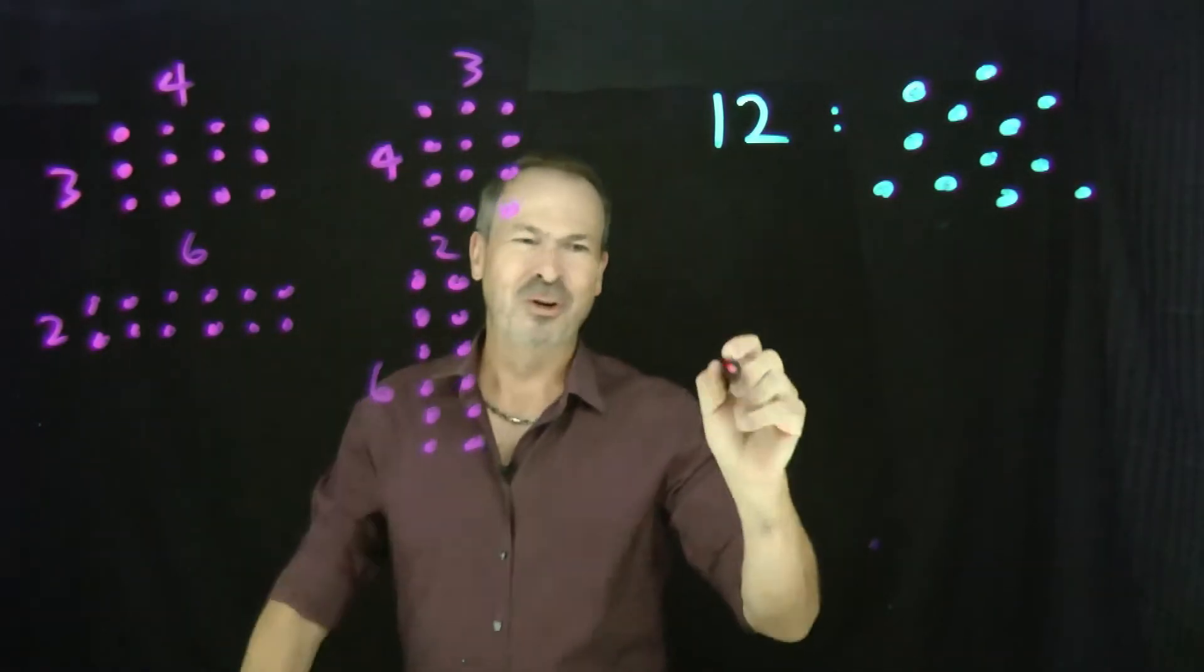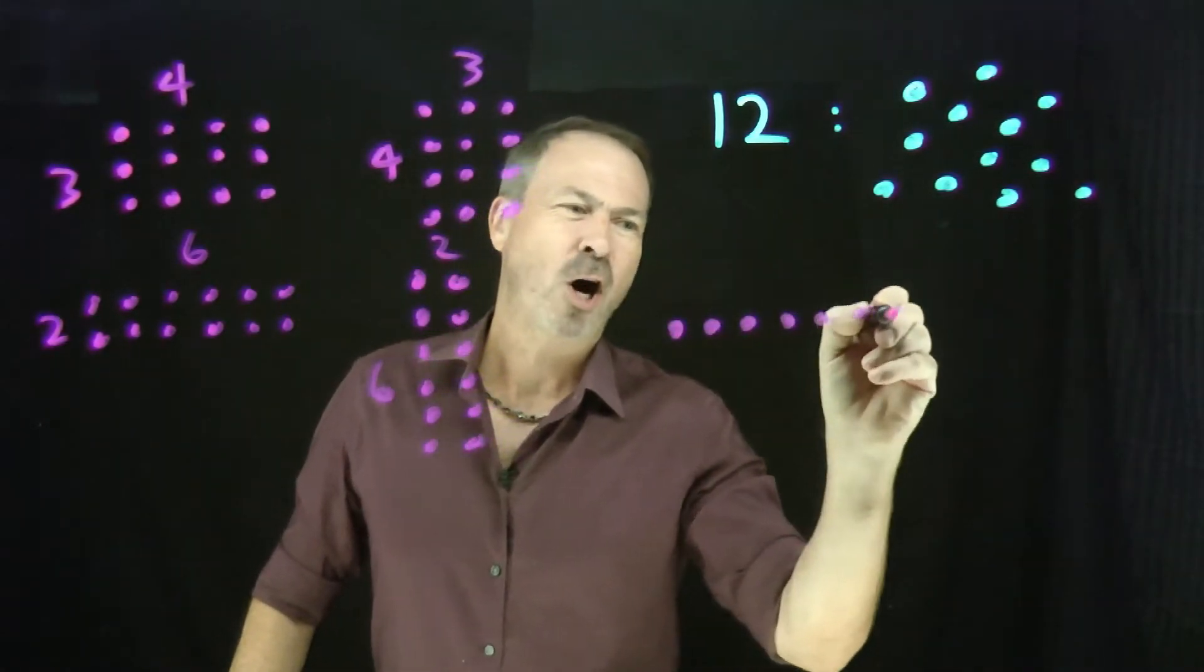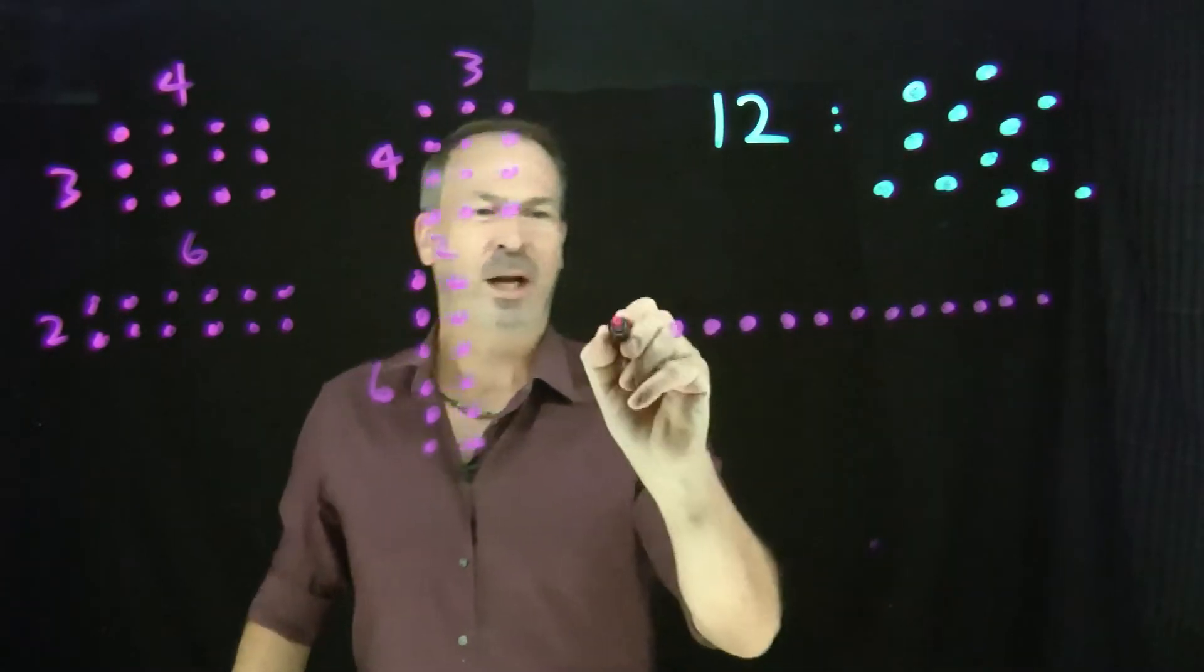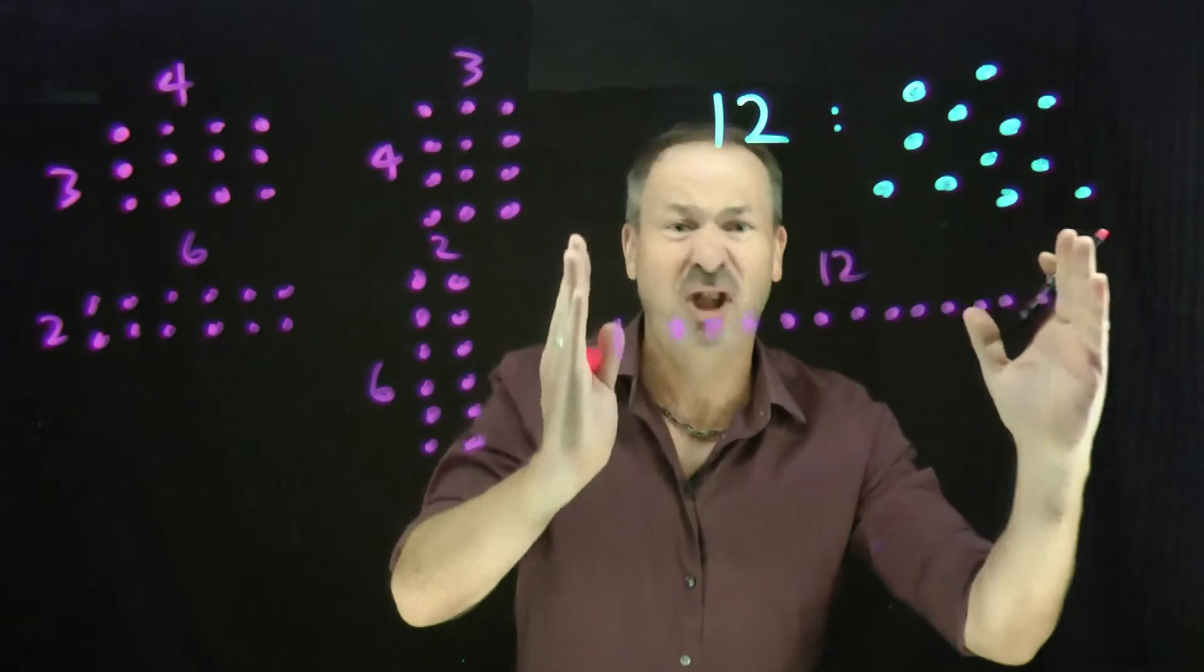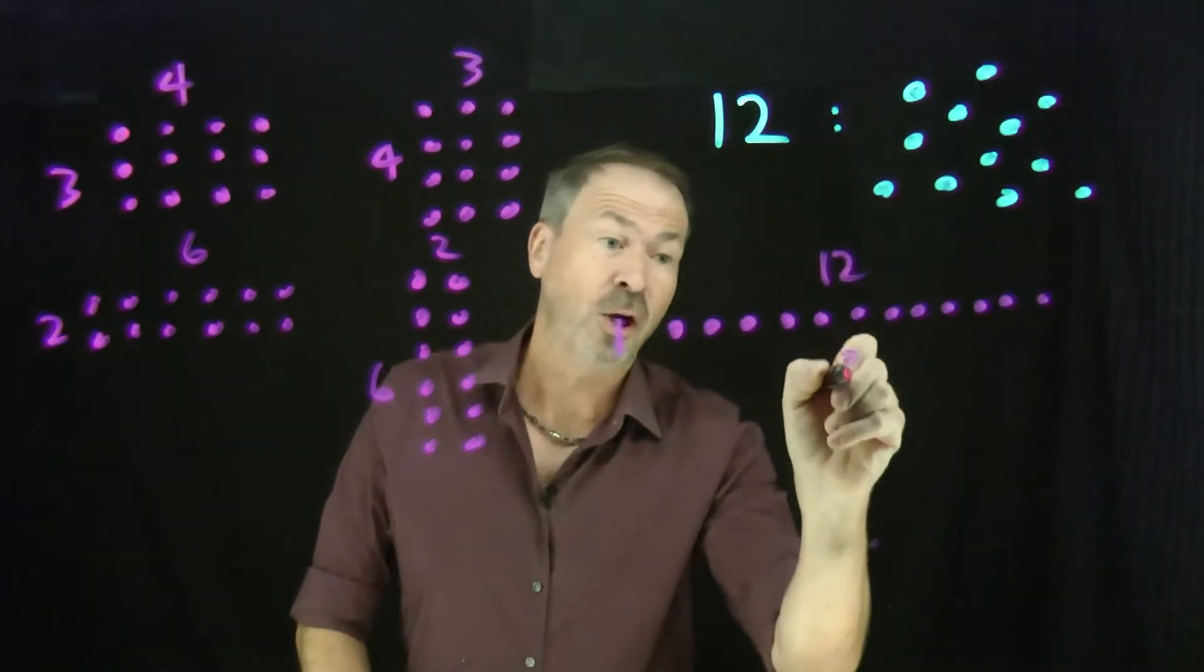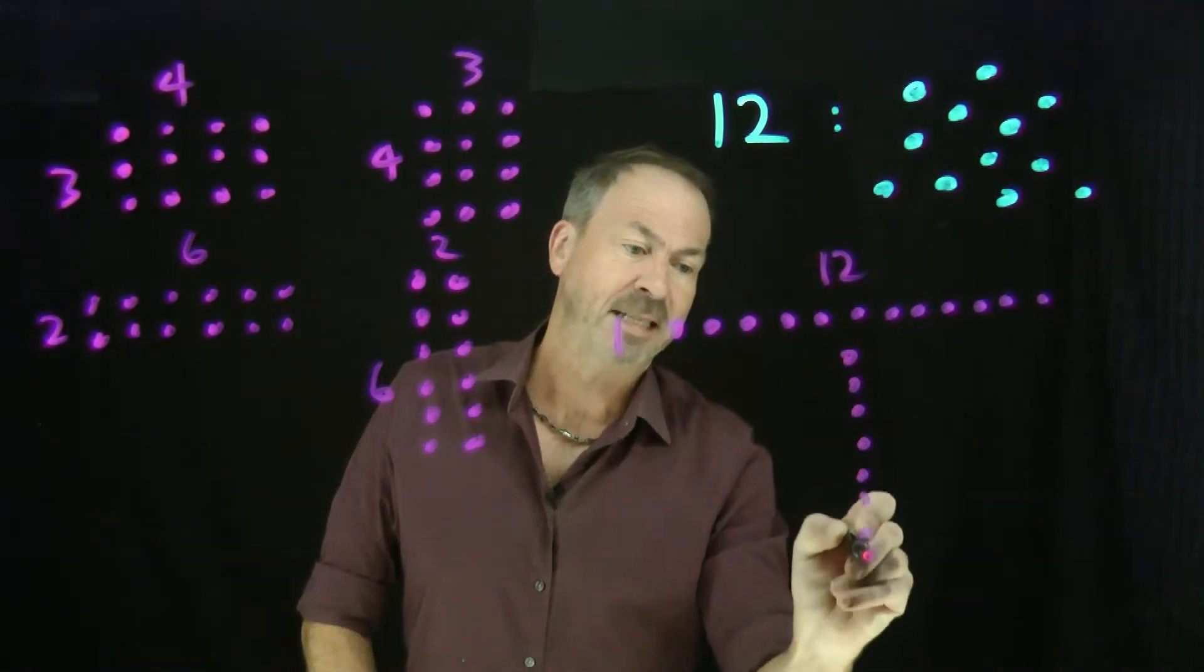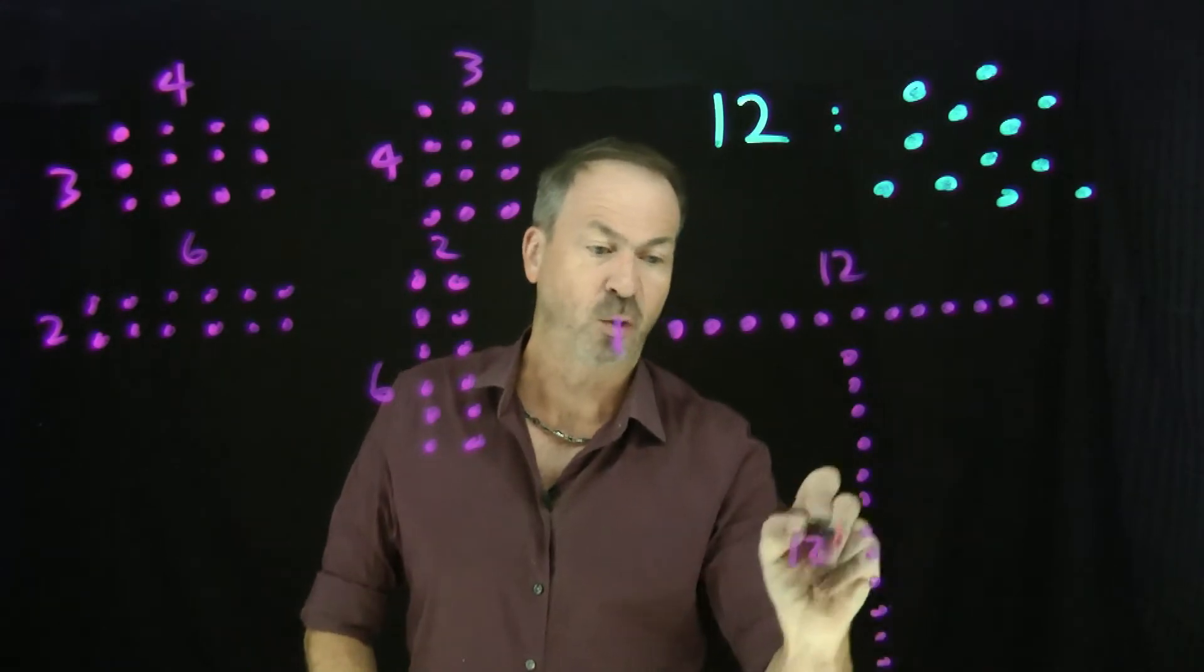In fact, I can also do, I don't know, this is a bit questionable, but a 1x12 rectangle. I don't know if I'll call that a rectangle. Some people might say yes, some people might say no. Okay, it's certainly like a degenerate rectangle. I can certainly make that as well. Or turn it around and make it a 12x1. That's another option I have here with 12 dots, 12x1.